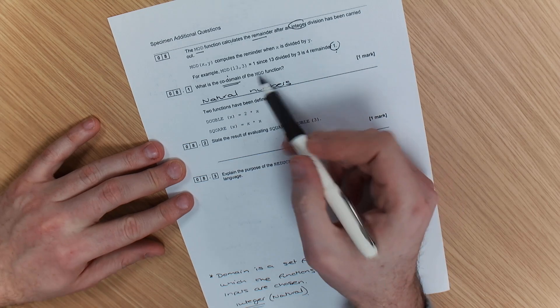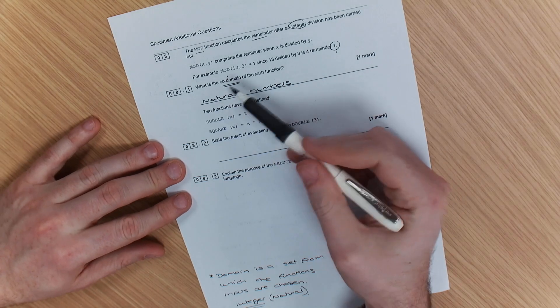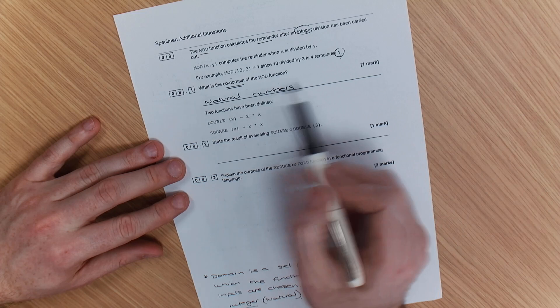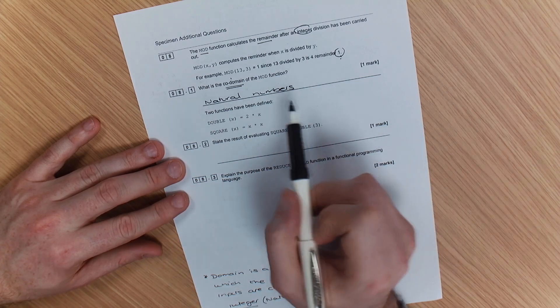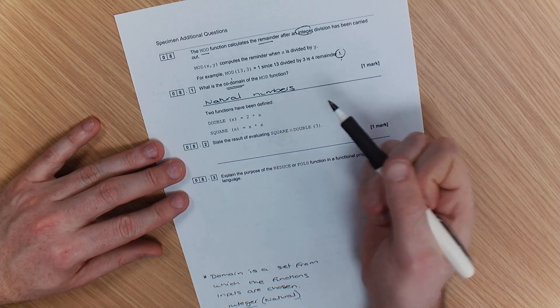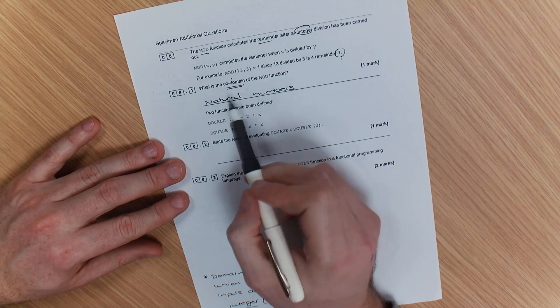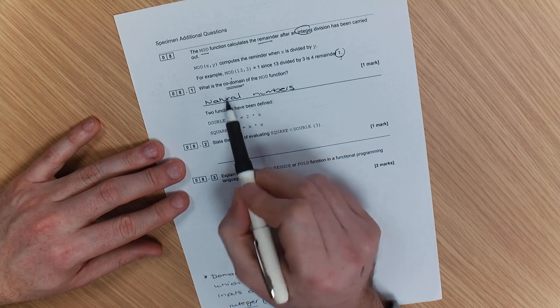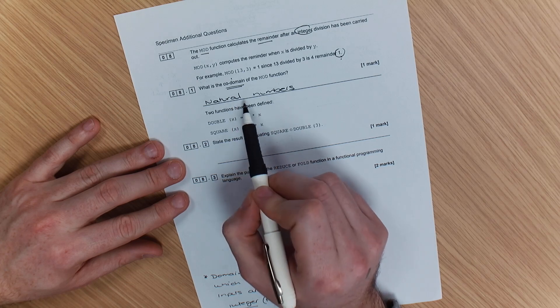So when you see questions like this, if it's saying what is the domain or co-domain, it wants to know the data type. So if, for example, you were working with decimals, it would be a real number. But in this case, we're working with whole numbers, therefore, they are natural numbers.